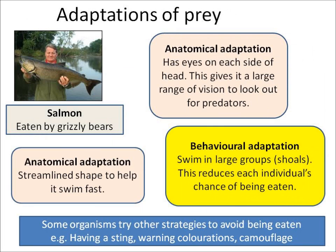Salmon are the prey — they're eaten by grizzly bears. They have a couple of anatomical adaptations to help them escape being eaten. They have eyes on each side of their head, which gives them a large range of vision so they can look out for predators on both sides. They are also streamlined so that they can swim fast through water.